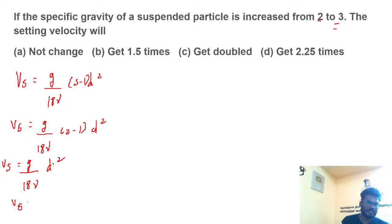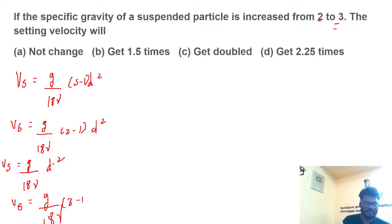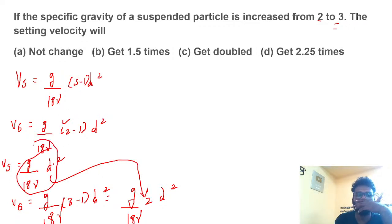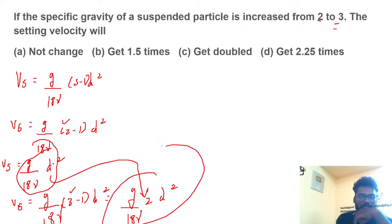For specific gravity 2: Vs = g/18μ × (2−1) × d² = g/18μ × d². For specific gravity 3: Vs = g/18μ × (3−1) × d² = g/18μ × 2d². So settling velocity is increased by 2 times — it gets doubled.